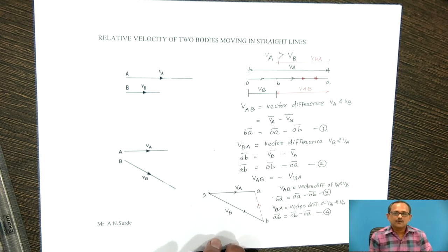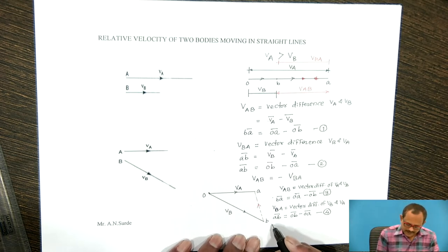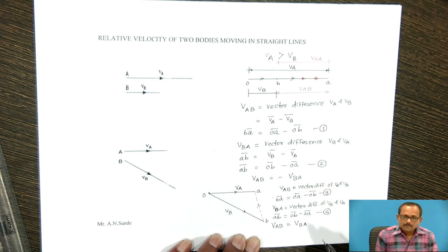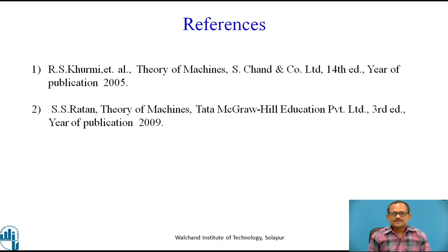From equation 3 and equation 4, we can conclude that the velocity of A with respect to B and the velocity of B with respect to A are both equal in magnitude, but they are opposite in directions. This particular material is referred from the book Theory of Machines by R.S. Khurmi and Theory of Machines by S.S. Ratan. Thank you.